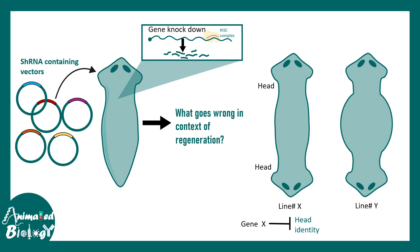This hinted that gene X, when downregulated, causes de-repression of head identity. The normal function of this gene is to suppress head formation — when the gene was intact, the tail formed where it should; when removed, a head formed in the tail's location. So this gene is an anterior identity suppressor. It turned out that line X was beta-catenin and line Y was Wnt1, revealing that Wnt/beta-catenin signaling governs the precision of regenerative polarity in planaria.